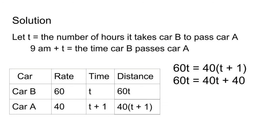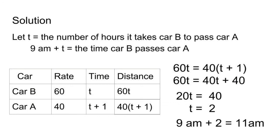Subtracting 40t from both sides of the equation, we have 20t equals 40. Dividing both sides by 20, we have t equals 2. And the time is 9 a.m. plus 2 hours equals 11 a.m. That's all.